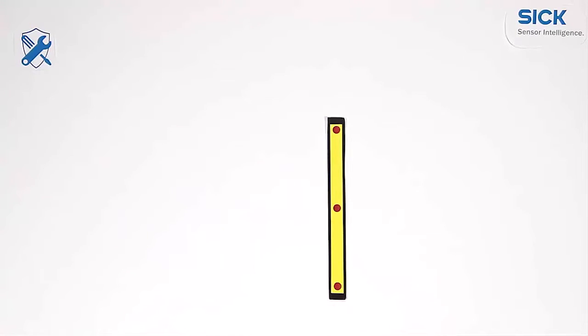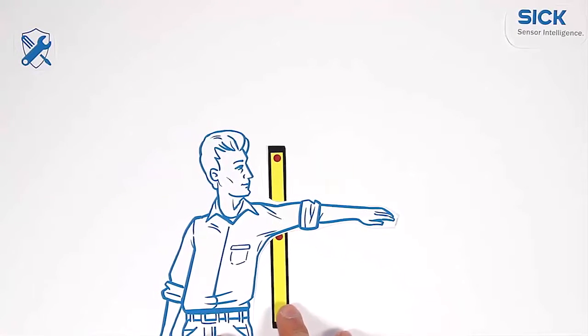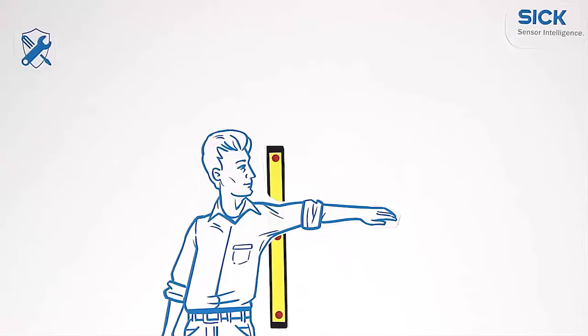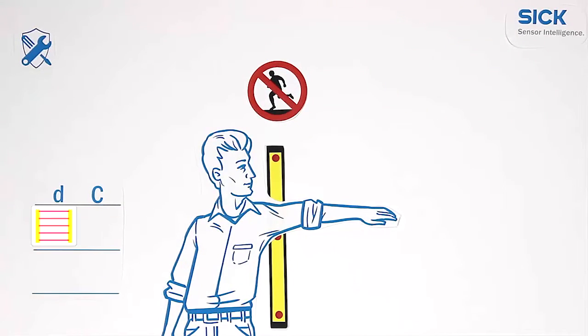Using a multi-beam system, a whole arm can reach through the light beams. Only bodies can be detected. For that reason, c is significantly larger: 850 mm.